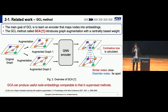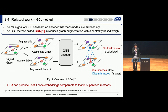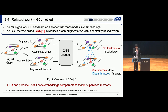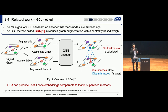In this slide, I explain the representative GCL method. The main goal of GCL is to train encoders that map nodes into embeddings. The GCL method called GCA introduced graph augmentation with centrality-based weights. This figure shows the overview of GCA. First, an original graph is converted to augmented graphs, and they are fed into the encoder to calculate contrastive loss. The contrastive loss is calculated so that similar nodes are close and dissimilar nodes are far away. By doing this, GCA can produce useful node embeddings comparable to those in supervised methods.